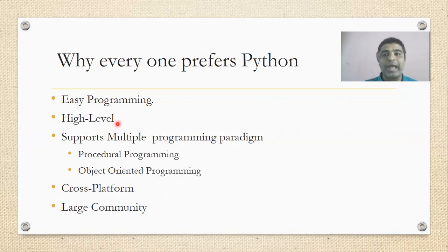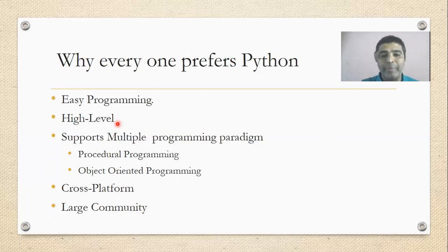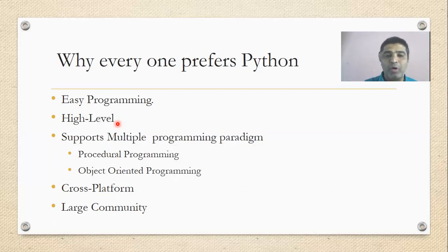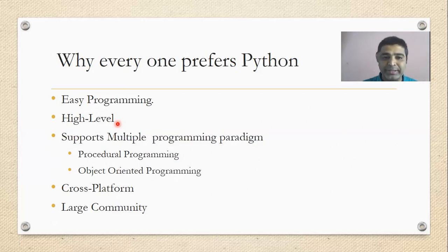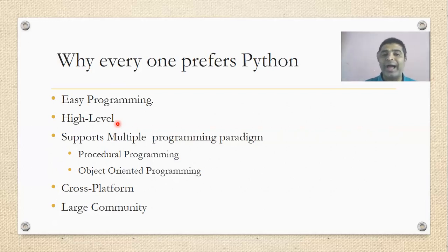Apart from that, Python is also a high-level programming language. When you talk about a traditional programming language, you need to manage memory — how memory is allocated, how to deallocate it — and you need destructors, constructors, and all those things. When it comes to high-level languages, automatic garbage collection is done automatically. There are a lot of built-in libraries for sorting algorithms and so on, so many background tasks are handled automatically. Python being a high-level language is one more reason why people prefer it.